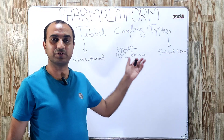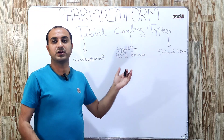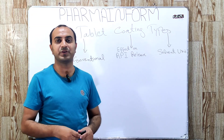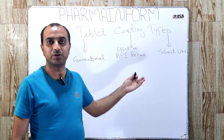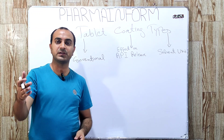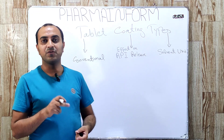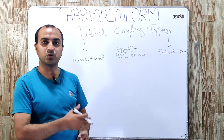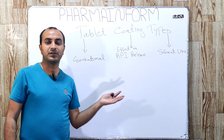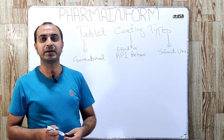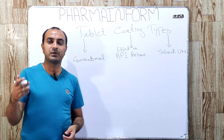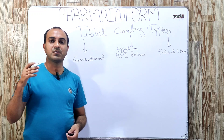Hello everyone, I am Sajjad and you are watching Farman Form. Today we will discuss types of tablet coating. Everyone is familiar with the types of tablet coating, and when asked, you can easily give the answer: film coating, enteric coating, and sugar coating. But this video is not related to that conventional answer, because through Farman Form, my aim is to spread more technical knowledge to pharma professionals and pharmacists.